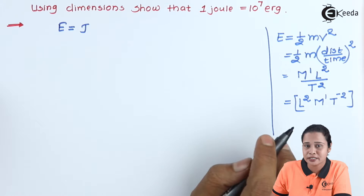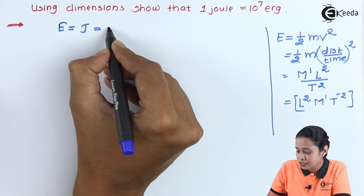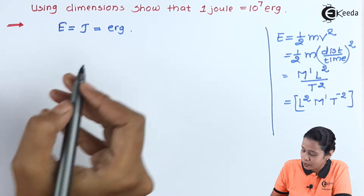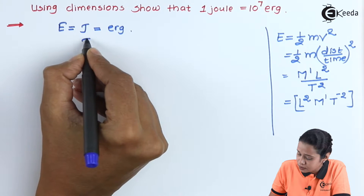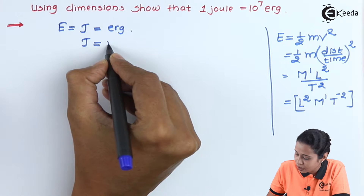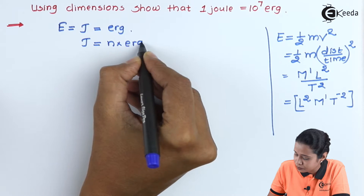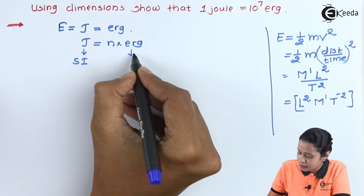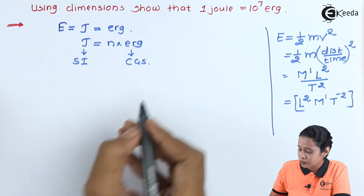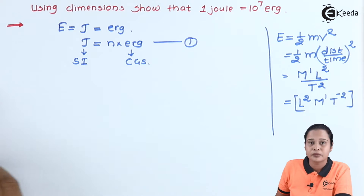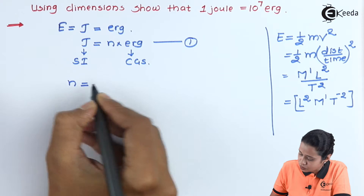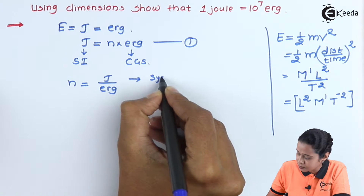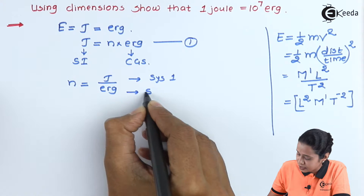We know we express energy in terms of joules, and another unit of energy is erg. We have to find out how many ergs means 1 joule. Here we have joules is equal to n into erg. We know joules is an SI unit and erg is a CGS unit. This is equation number 1. Let us find out n is equal to joules upon erg. This is our first system, and this one will be the second system.